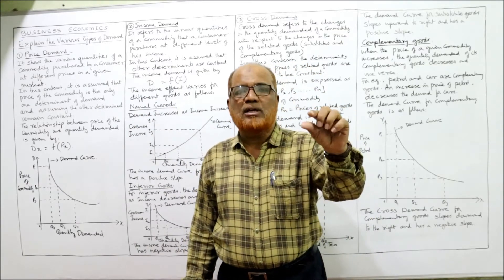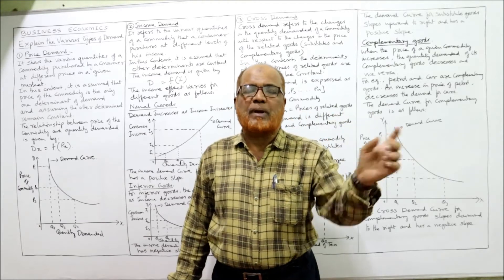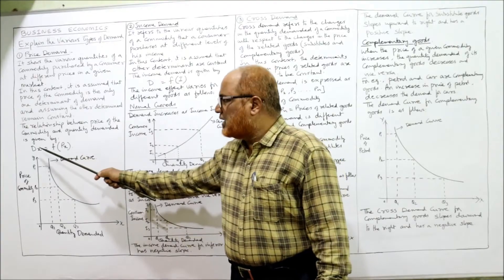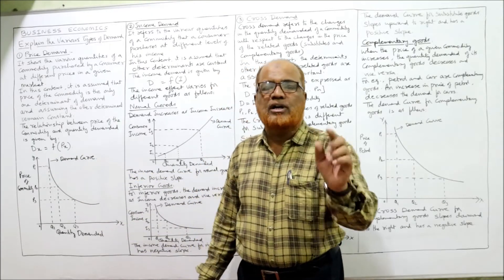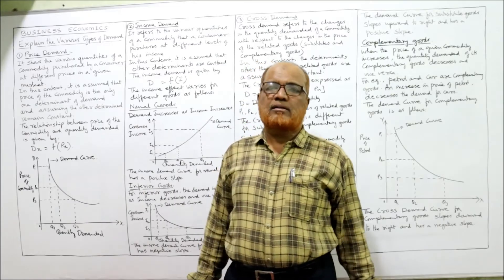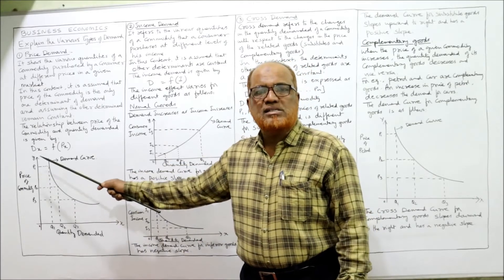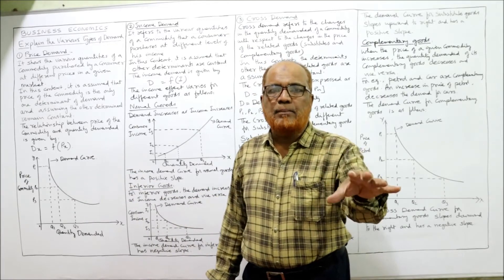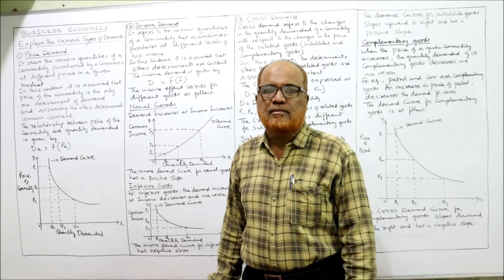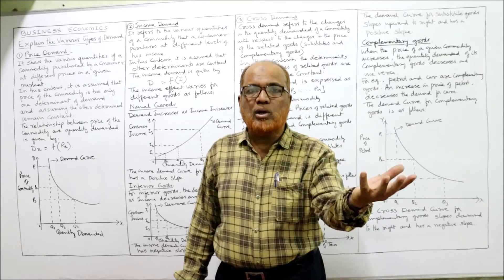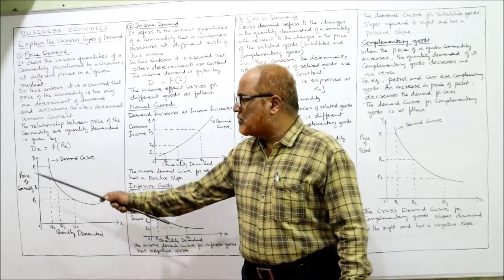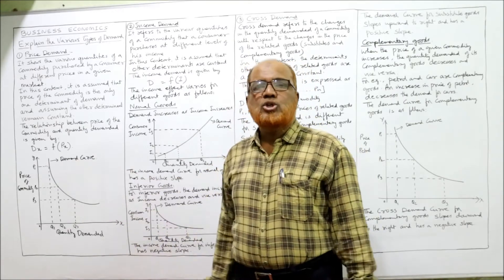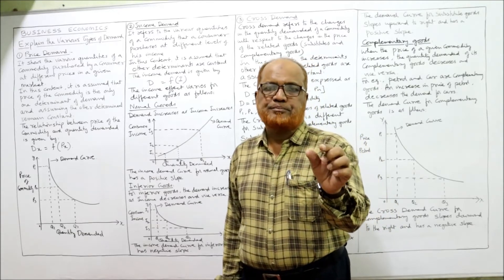The mathematical function for price demand is: DX = f(PX), where DX is the demand for commodity X and PX is the price of commodity X. This means demand depends on price — as the price changes, the demand will also change.